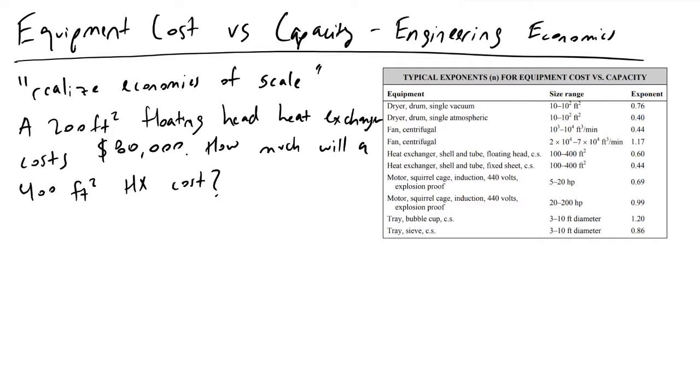And so the very first thing to understand here is that we're going to be making use of a formula. And that formula tells us that the cost of A is equal to the cost of B times the capacity of A divided by the capacity of B raised to some n, where n is an exponential term.